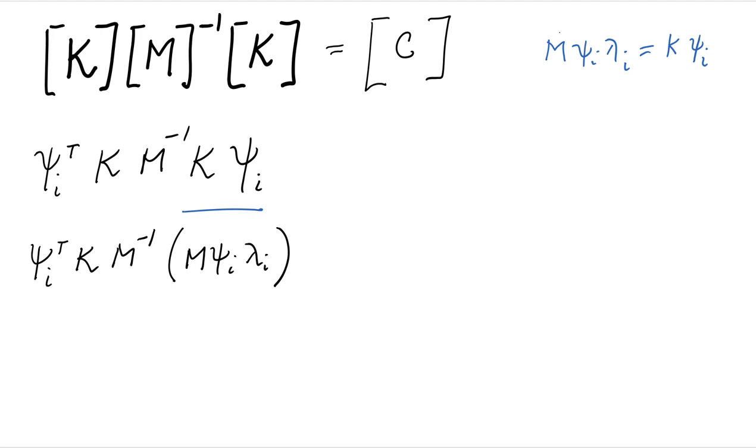Well, M to the minus one times M becomes the identity. And then we are left with phi I transpose K phi lambda. We know that by the property of eigenvalue orthogonality that phi I transpose K phi, if these are mass normalized, this is lambda I. So then the whole thing becomes lambda I square.